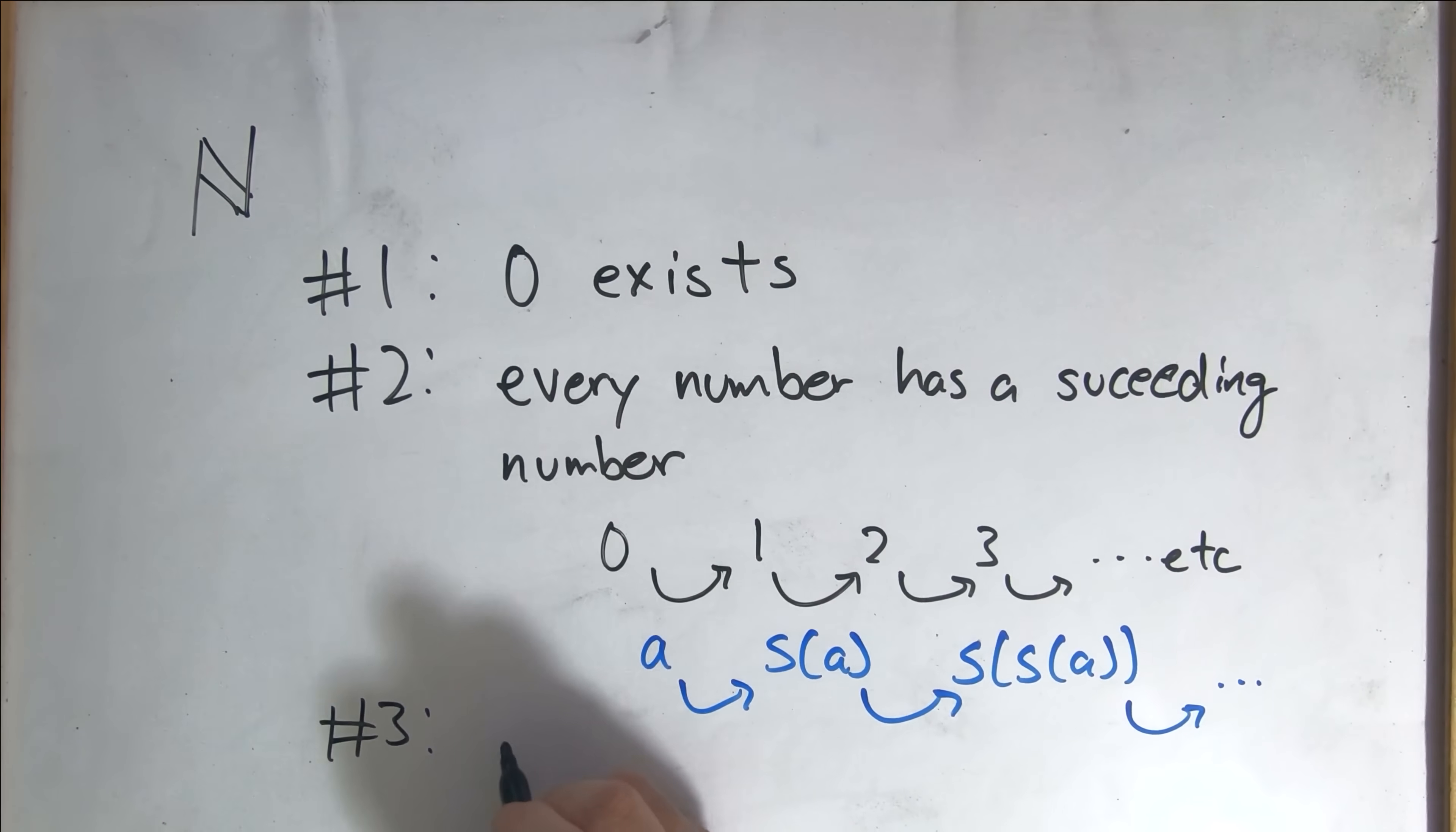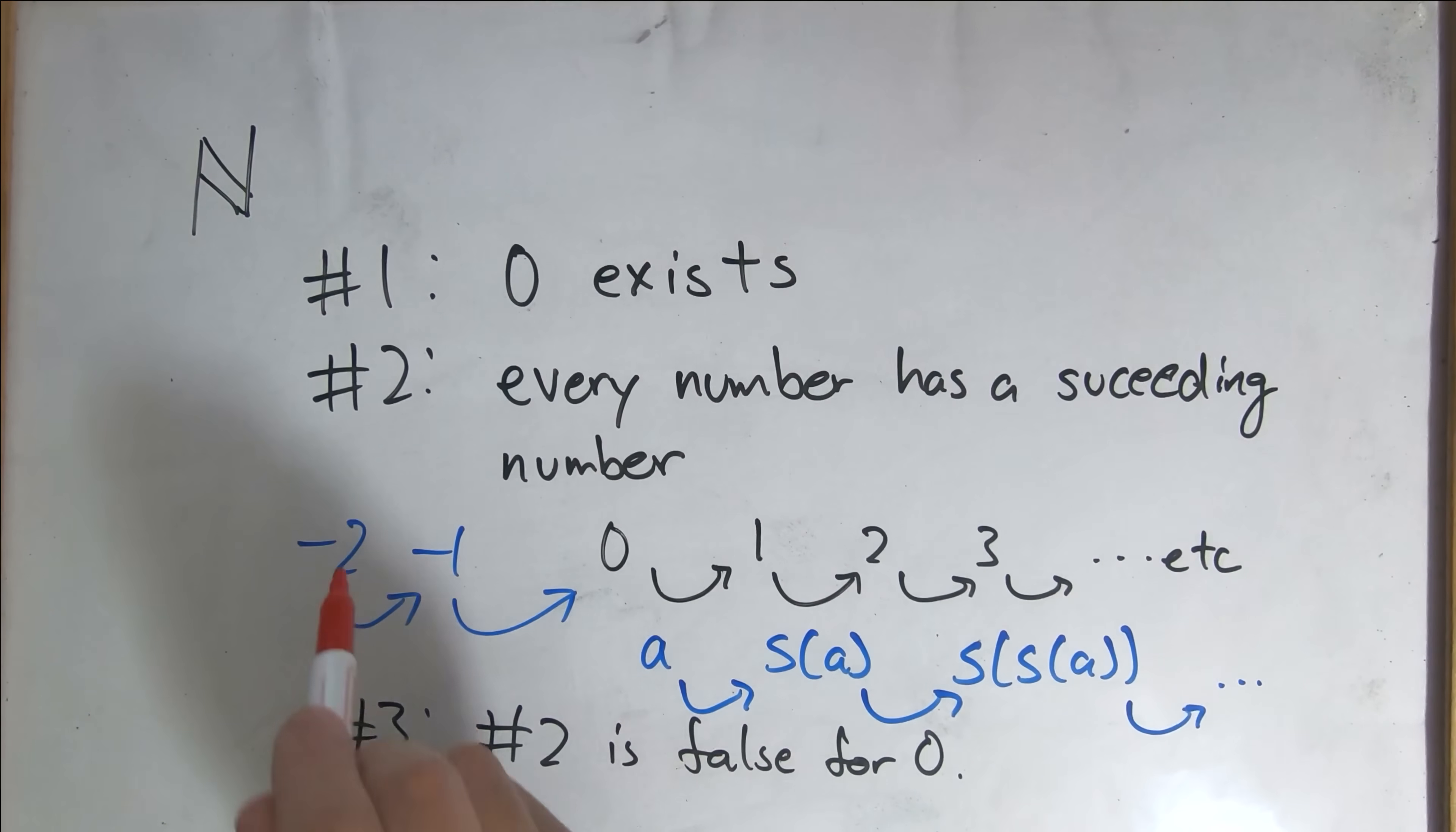Number 3. Number 2 is false for zero. When showing 1 plus 1 equals 2, we don't need to consider the existence of negative numbers. So all of this, we don't need to consider. And so we need to make sure to state that there exists no number whose succeeding is zero.